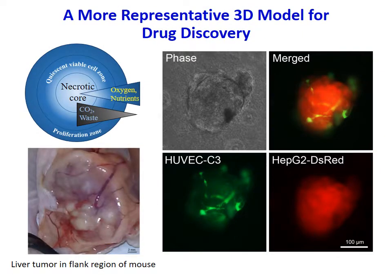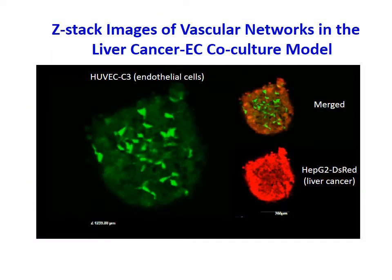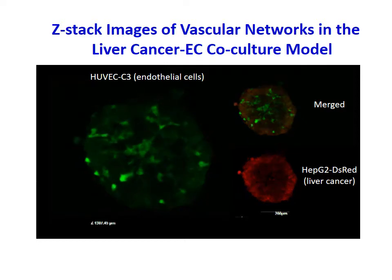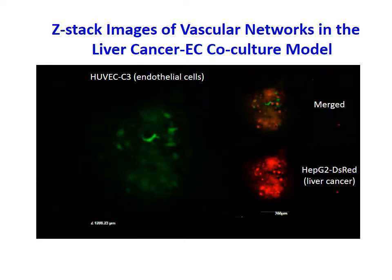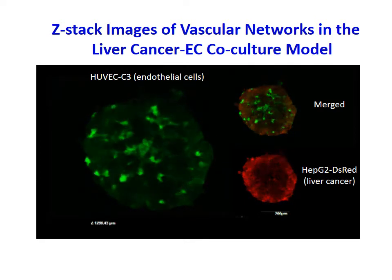We compared our 3D co-culture spheroid with a xenograft tumor in the mouse model and found that there were similarities in terms of their vascular structures, cell-cell interactions, and protein expressions. This is a video showing the vascular networks within the liver cancer and endothelial cell co-culture model. You can see that the endothelial cells differentiate in a chaotic and unorderly manner.